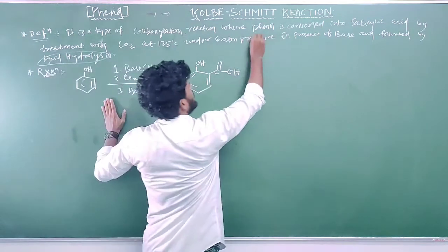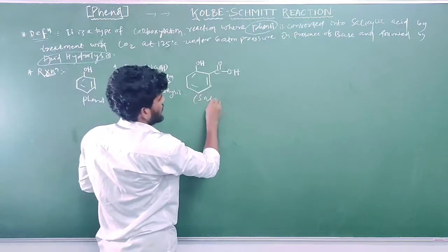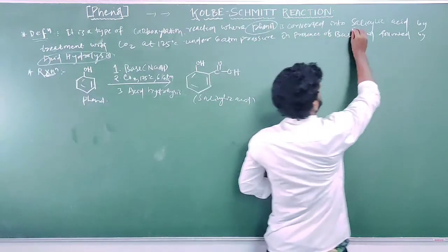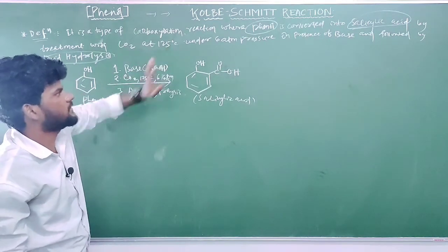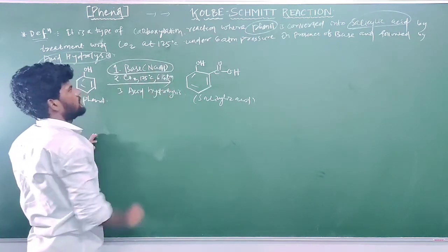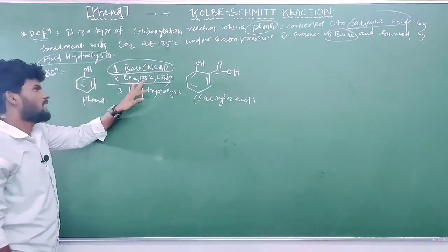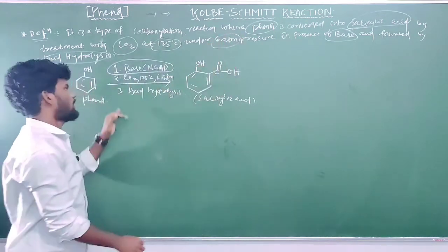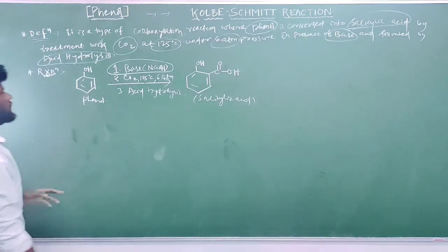So the starting material phenol is converted into salicylic acid. By treatment with CO2 at 125 degree Celsius and 6 atmosphere pressure, but before that we give base — sodium hydroxide — to increase the reactivity of phenol. The reason for this will be studied in the mechanism. Followed by acid hydrolysis in the last step.